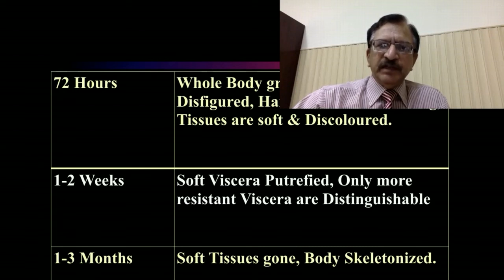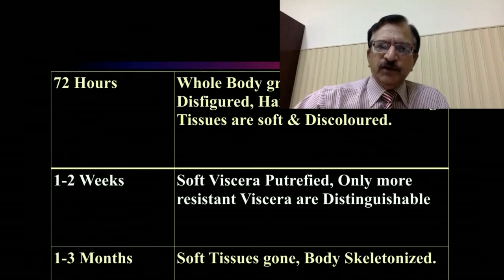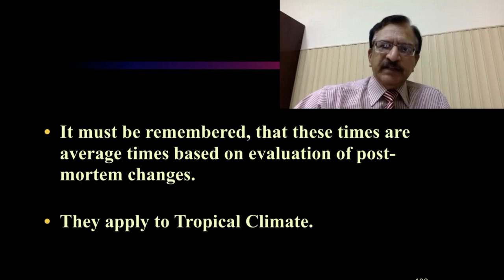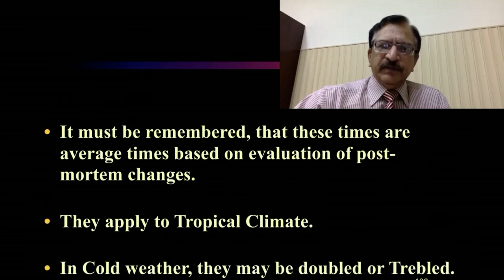In one to two weeks, the soft tissue viscera have been putrefied and only more resistant viscera will be distinguishable. In one to three months, soft tissue is gone and the body is skeletonized. It must be remembered that these times are based on the evaluation of post-mortem changes and give us a range. They apply in tropical climates. In cold weather, they must be doubled or tripled — meaning twice or thrice the normal time for these changes to appear.